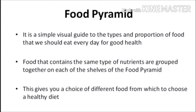It is a simple visual guide to the types and proportion of food that we should eat every day for our good health. Food that contains the same type of nutrients are grouped together on each of the shelves of the food pyramid and this gives you the choice of different food from which to choose a healthy diet.